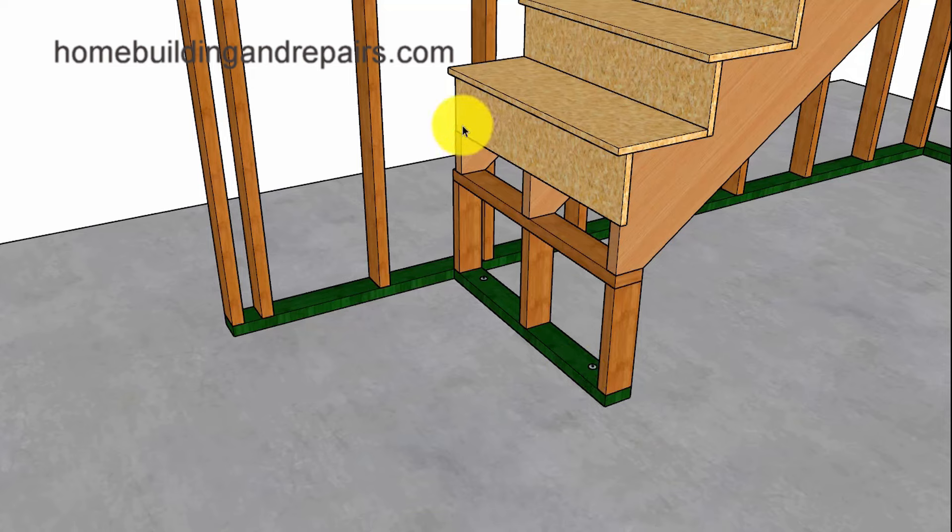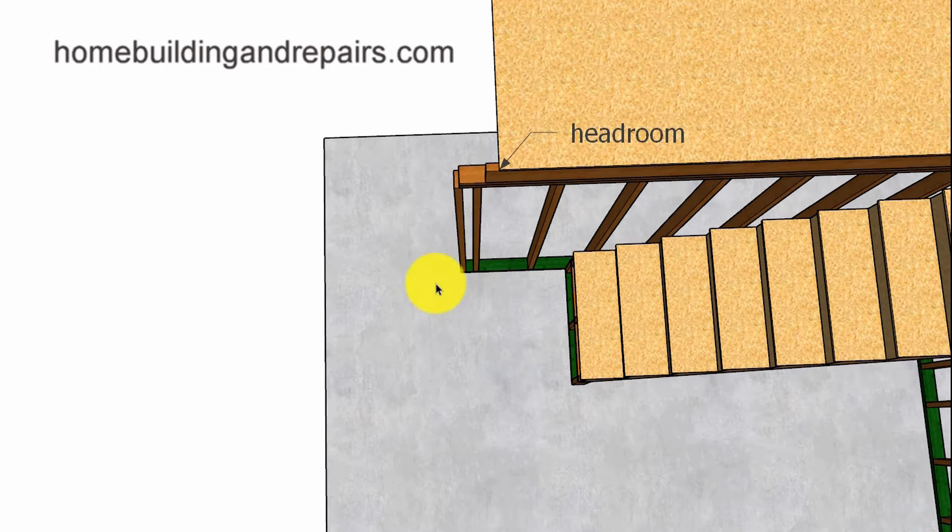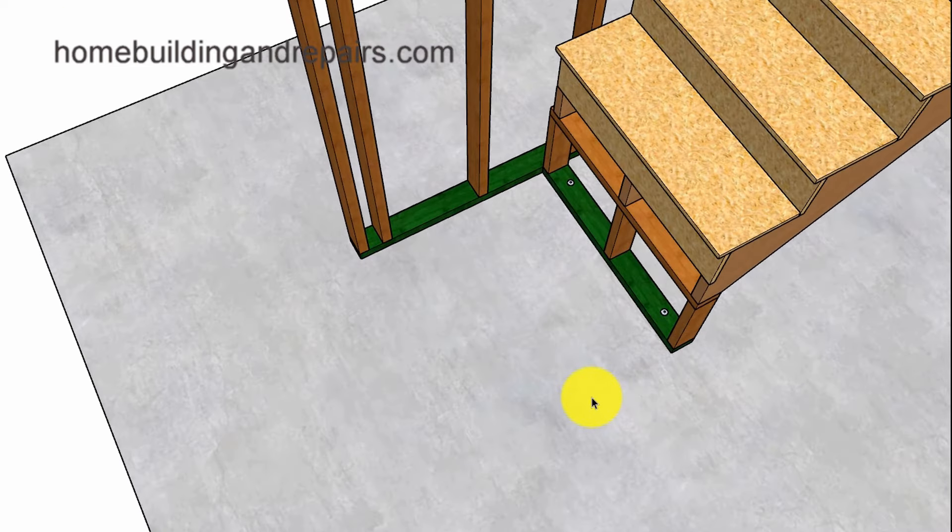So with that said let's go ahead and cut our stringers and we're doing this again to make it a little easier to lay out these steps for the winder stairs. And another thing I want to point out is the head room make sure that the upper floor isn't going to be in the way of the stairway that you're modifying. And I have other videos that will provide you with building code information also.